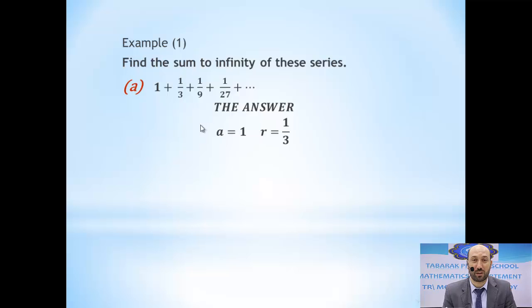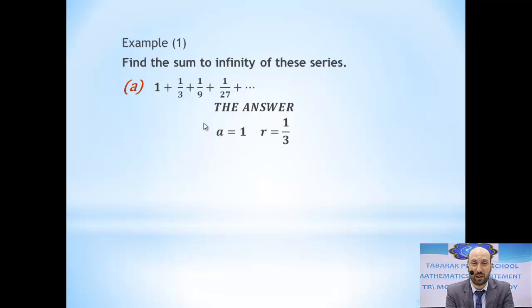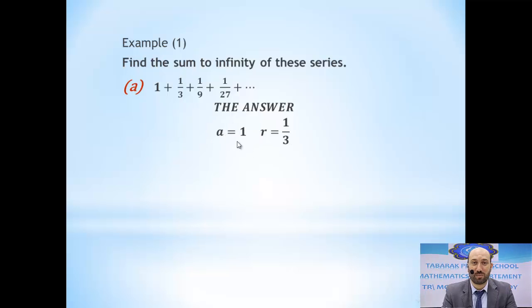To find the sum of n terms we need the first term and the common ratio. The common ratio is the quotient of division of any two consecutive terms: 1/3 divided by 1 equals 1/3. If we divide 1/9 by 1/3 we get 1/3. If we divide 1/27 by 1/9 we also get 1/3. So we have a common ratio — not a common difference — meaning this is a geometric series. The first term a is 1.